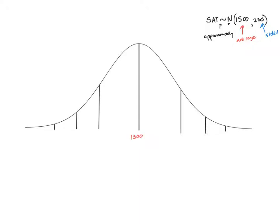Right away I can tell the average person is going to score around a 1500 — that's the center value. If I surveyed everyone and made a histogram, the highest bar would be at the center at 1500, because it's the average score and the distribution is symmetric and unimodal. Now I'm going to take that center and go one standard deviation on either side — adding one standard deviation and subtracting one standard deviation.